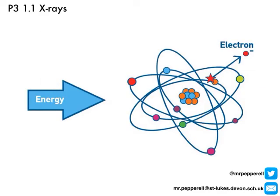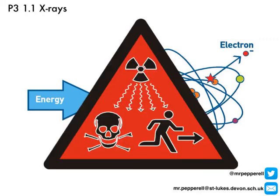X-rays are really useful but also really dangerous. From our work in P2 on ionising radiation, x-rays are a type of ionising radiation — the energy in an x-ray can knock electrons out of atoms and produce ions. High doses of x-rays can kill cells, and even small doses can damage DNA and cause mutations. Therefore workers who work with x-rays in radiology departments have to limit their exposure and wear a film badge to indicate the level of exposure to ionising x-rays they've had.